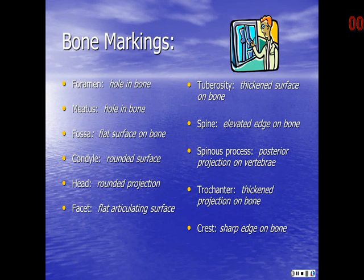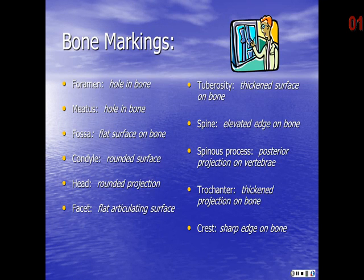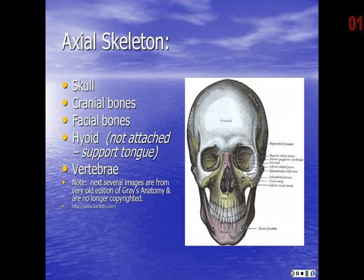The tuberosity is a thickened surface on bone, such as the tibial tuberosity you can feel just below your kneecap. The spine is an elevated edge on bone, like the spine of the scapula. A spinous process is the posterior projections on the vertebrae, which are the bumps you feel going down the center of your back. The trochanter is a thickened projection on bone, like the greater trochanter you can feel on the lateral side of your hips. A crest is a sharp edge on bone, such as the iliac crest which you can feel at the top of the pelvic bowl.